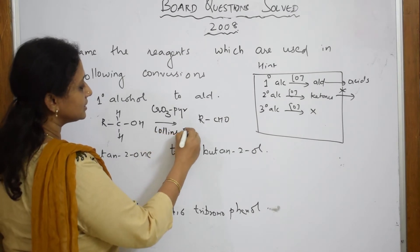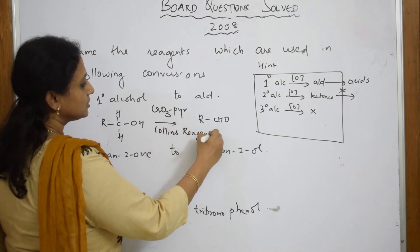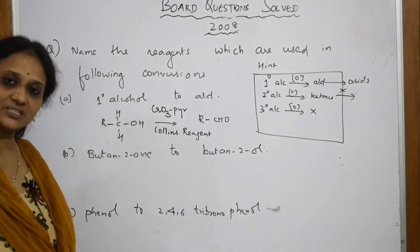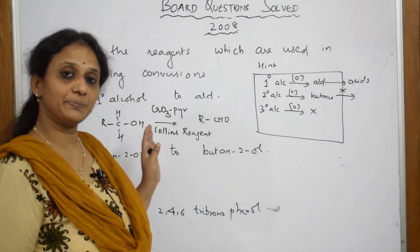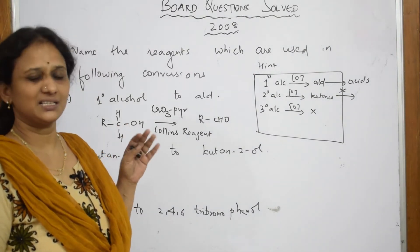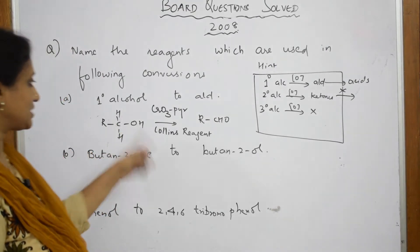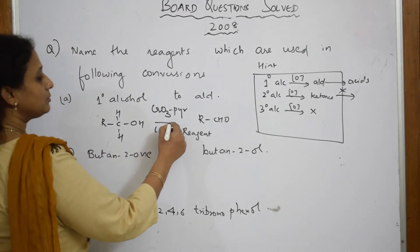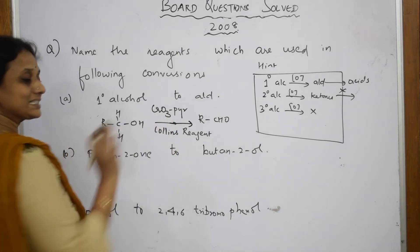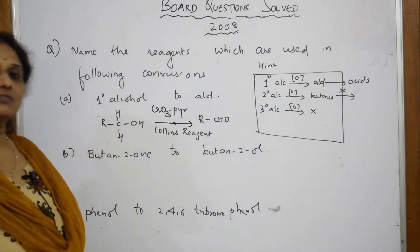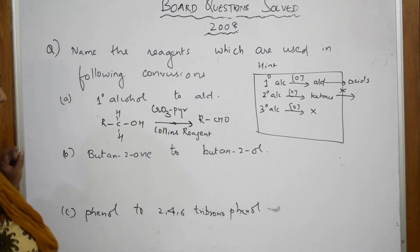What is this reagent? Collins reagent. This is your Collins reagent. Even your PCC, pyridinium chlorochromate, for partial oxidation you can use that also.